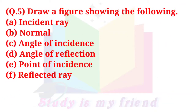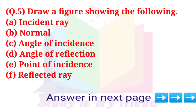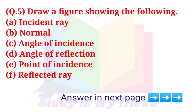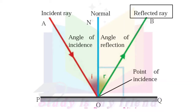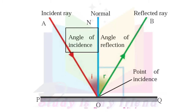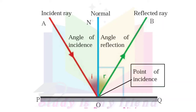Question 5: Draw a figure showing the following — A. Incident ray, B. Normal, C. Angle of incidence, D. Angle of reflection, E. Point of incidence, F. Reflected ray. Answer: The diagram shows the incident ray, normal, reflected ray, angle of incidence (i), angle of reflection (r), and the point of incidence.